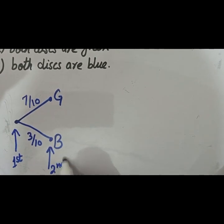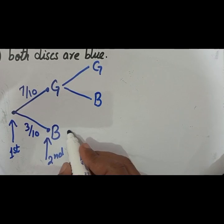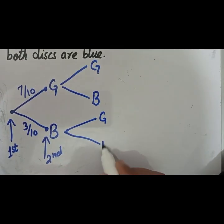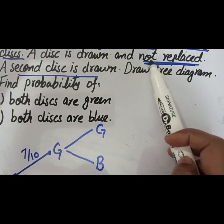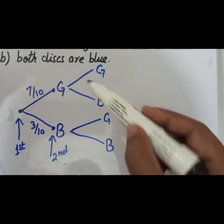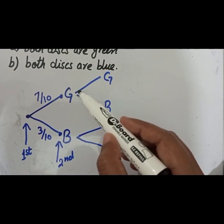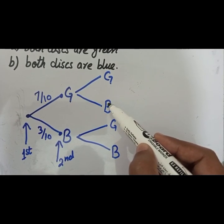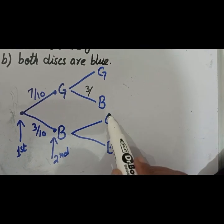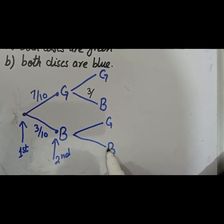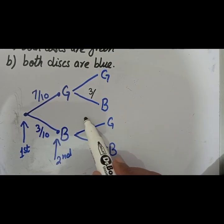For the second draw, we branch into green and blue from each first-draw outcome. Because the word 'not replaced' is used, the total sample space will be disturbed. When dealing with the green branch, the number of blue balls remains three. When dealing with the blue branch, the number of green balls remains seven.